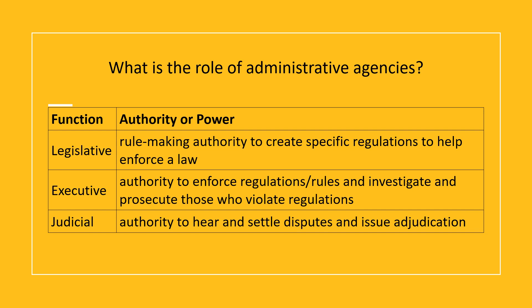When focusing on administrative agencies having legislative functions, this is the rulemaking authority to create specific regulations to help enforce a law. So once a law is passed and signed by the president or the governor, it is up to the agencies — made up of experts in that area, whether it be health, medicine, housing, education, military, etc. — to create the specific regulations that would then enable that law to be enforced.